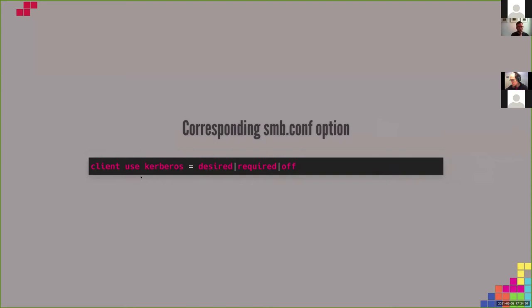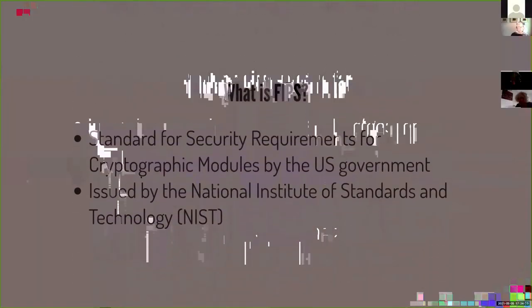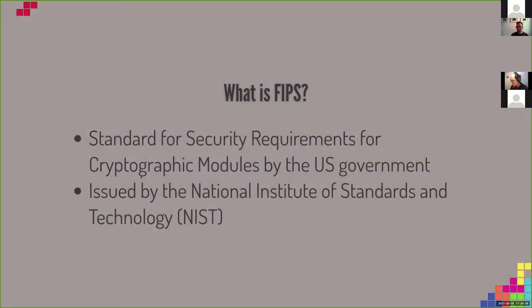For --use-kerberos, there is a corresponding smb.conf option which has been added so that you can change the default. Shortly, we need to talk about FIPS mode. FIPS is a standard for security requirements for cryptographic modules by the US government, and it is currently the main driver behind this work. There has been a big effort at Red Hat for this.